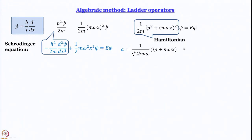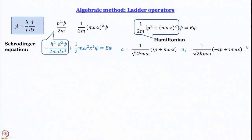If it were a number, you could write it as (iu + v)(−iu + v), but since these are operators that will not be the case. Let us see what happens when we take (ip + mωx) and (−ip + mωx). We work out their products and see how far we are from the Hamiltonian. Solutions look better if we include a factor of 1/√(2ℏmω). So a_minus and a_plus — these two are operators in themselves, and these are our ladder operators.